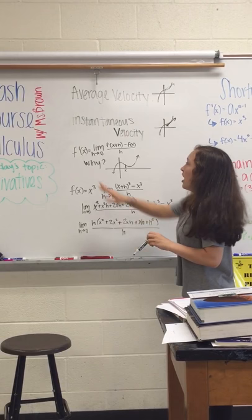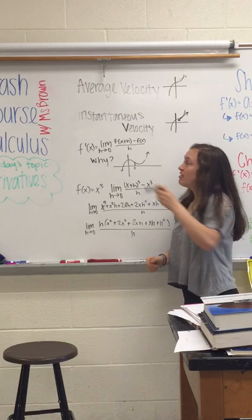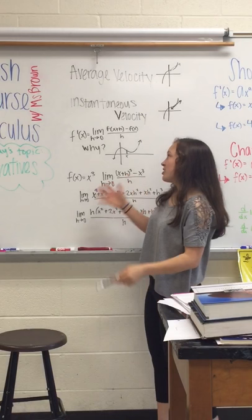So, to determine the tangent line, you have f prime of x equals the limit as h approaches 0 of f of x plus h minus f of x over h. Now, why does this apply, or how does this work?